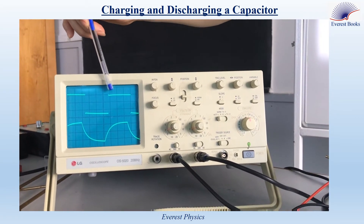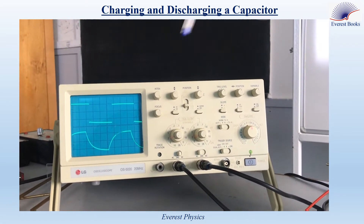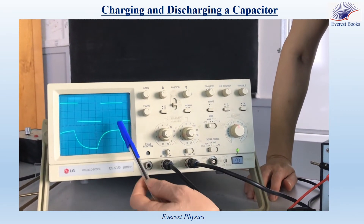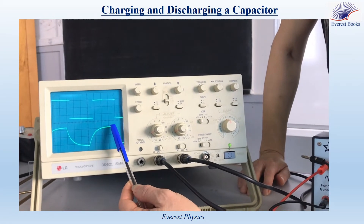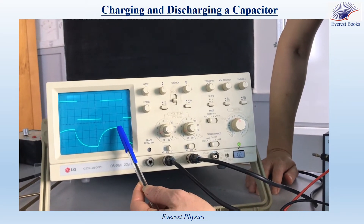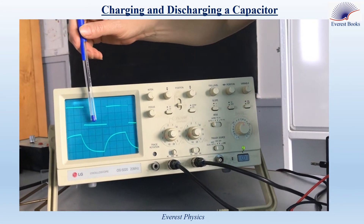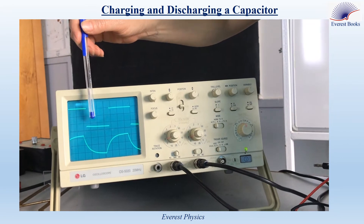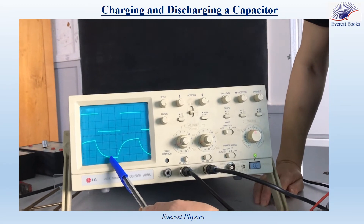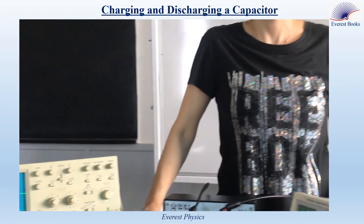During a half period, the voltage provided by the function generator is maximum. During the same time, the voltage across the capacitor increases — this is the charging phase of the capacitor. At the end of the charging phase, the voltage across the capacitor becomes maximum and we say that steady state is attained. During the second half period, the voltage becomes zero. This is the discharging phase of the capacitor because the voltage across the capacitor decreases. When the voltage becomes zero or constant, we say that the steady state is attained.